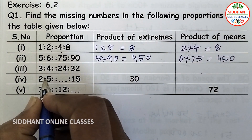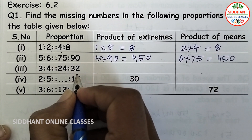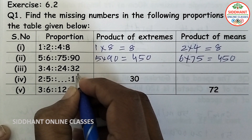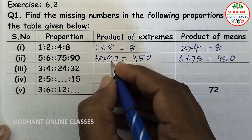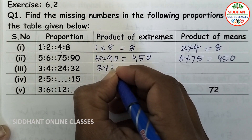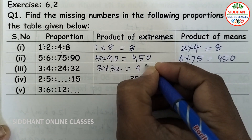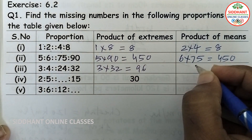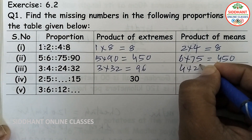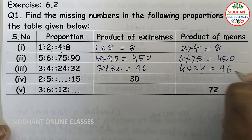Third proportion: 3 is to 4 and 24 is to 32. Product of extremes: 3 into 32 equals 96. Product of means: 4 into 24 also equals 96.